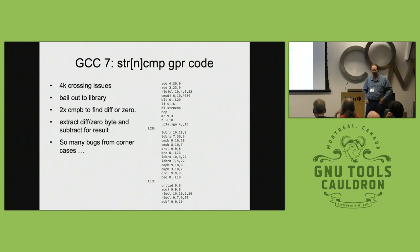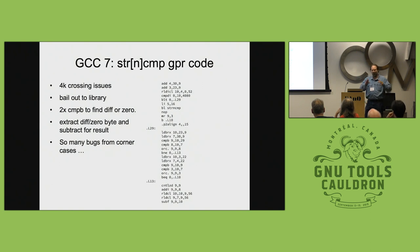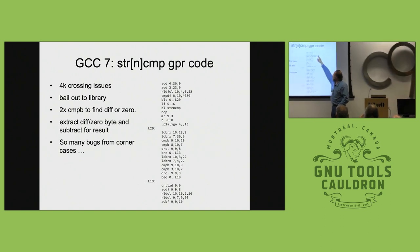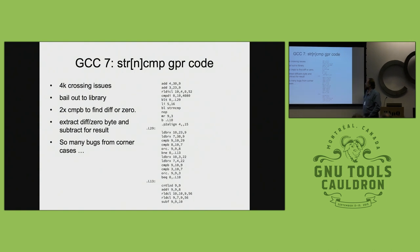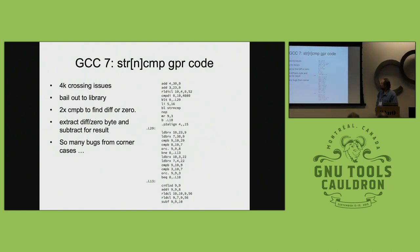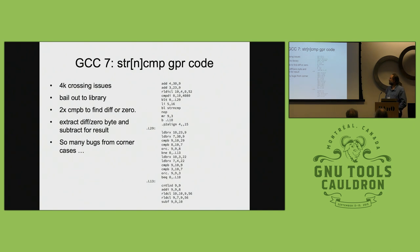Most of the time the string is in the middle of the page, but you obviously can't ignore page crossings for string compare, though for memcompare it doesn't matter because by definition you have to read every byte. So at the top there's a bail-out to the library's string compare if it looks like it's going to cross the 4K boundary.